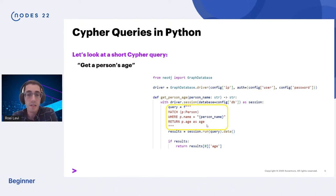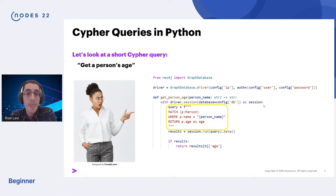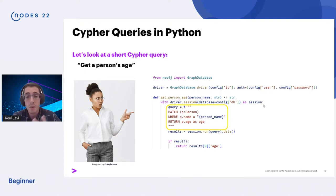As a software developer, there are a few things that bother me here. One is that this is a literal string in my code — we don't really like having long strings in our code, and as Cypher queries get more complicated this string can become very long. Another issue is that this query is written precisely for one use case — retrieving a person's age — so it would be difficult to reuse it in similar but different situations. Third, if I write this query from scratch I can easily make syntax errors that will make the Cypher invalid.